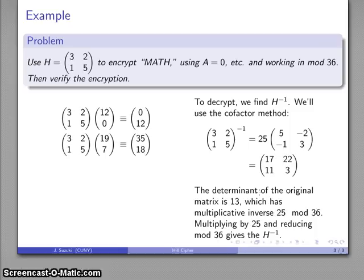And then reducing gives me (17, 22; 11, 3) as our inverse. So, to decrypt the message, I'll take the encrypted vectors and then multiply them by the reciprocal matrix.